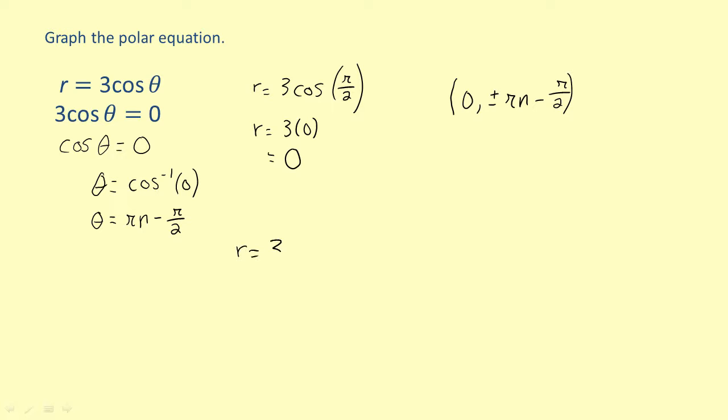So we'll substitute zero for theta and solve. This gives us r equals three times one, which equals three. This means the point is the maximum value of r.